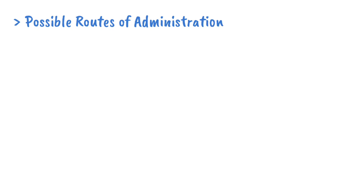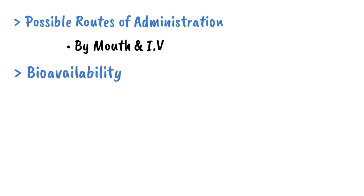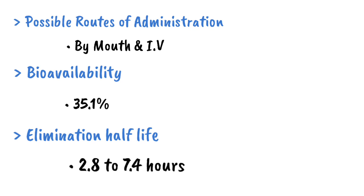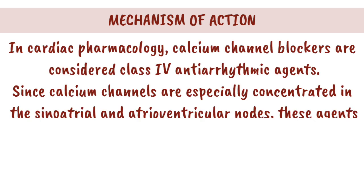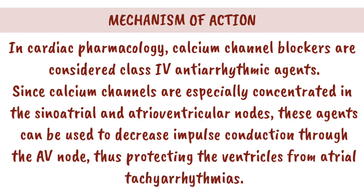Possible routes of administration: by mouth and intravenous. Bioavailability: 35.1%. Elimination half-life: 2.8 to 7.4 hours. Mechanism of action: in cardiac pharmacology, calcium channel blockers are considered class 4 antiarrhythmic agents. Since calcium channels are especially concentrated in the sino-atrial and atrioventricular nodes, these agents can be used to decrease impulse conduction through the AV node, thus protecting the ventricles from atrial tachycardia arrhythmias.